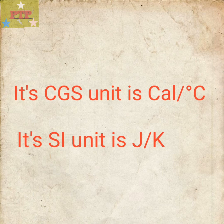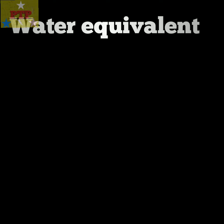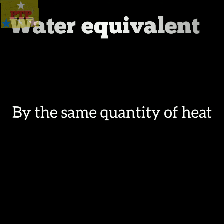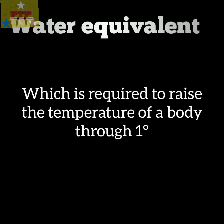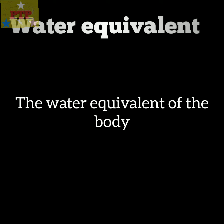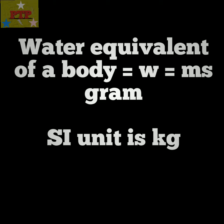The SI unit of heat capacity is joule per Kelvin. Water equivalent: the amount of water whose temperature is raised through one degree by the same quantity of heat which is required to raise the temperature of a body through one degree is known as the water equivalent of the body. The water equivalent W equals ms grams, and the SI unit of water equivalent is kilogram.